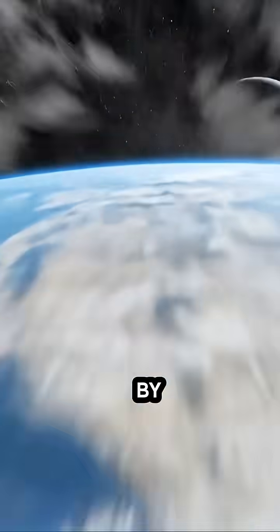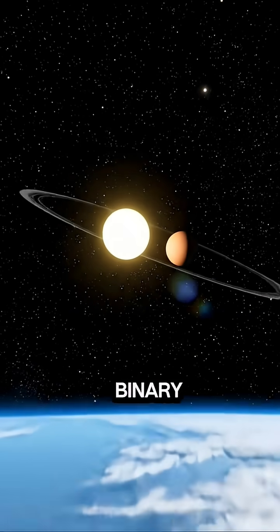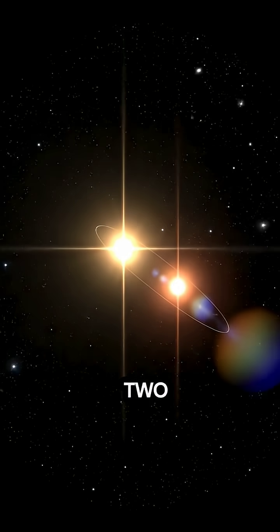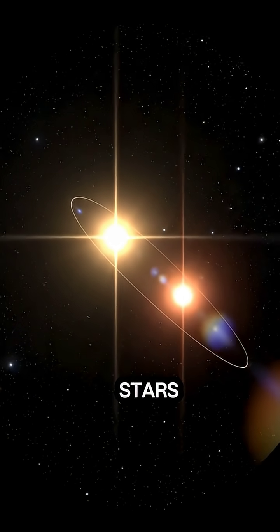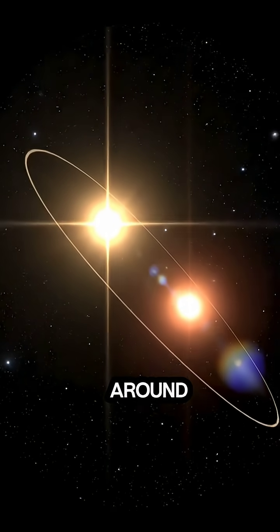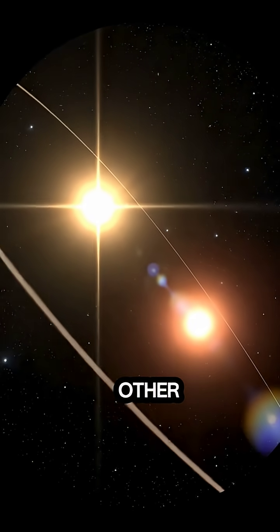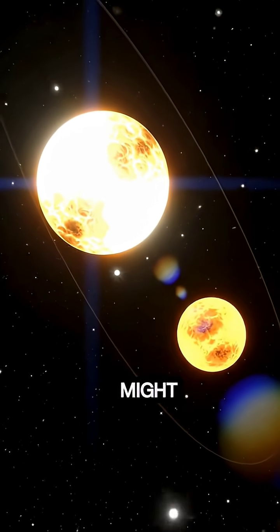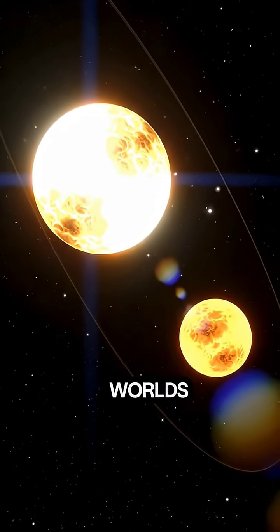Close by is the Alpha Centauri binary system, around 4.37 light years distant. Two sun-like stars revolve around each other. A vision of what a double sunrise might look like from any worlds there.